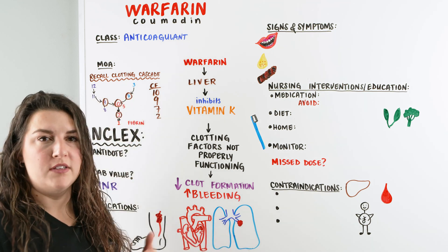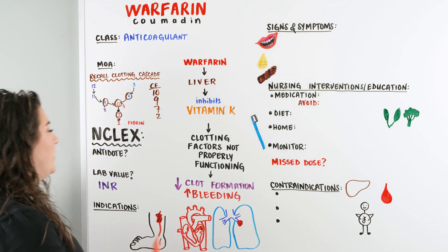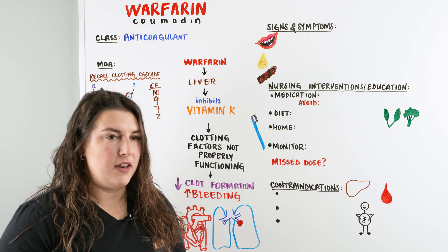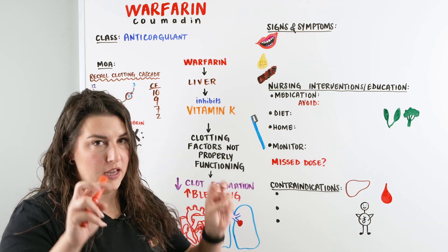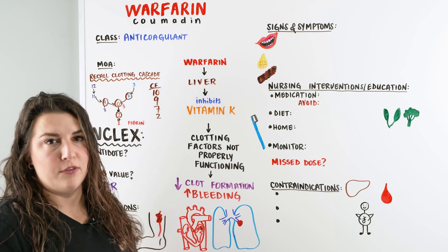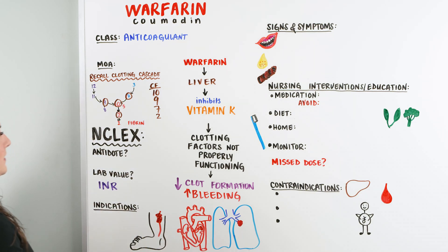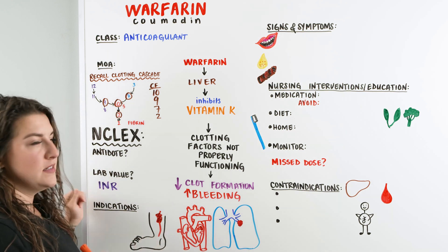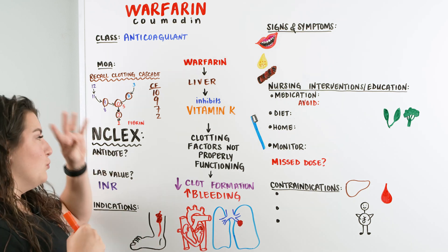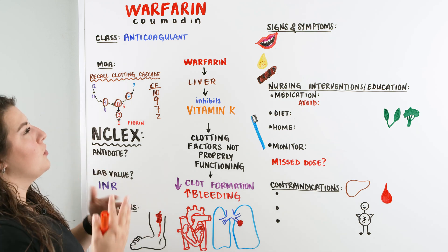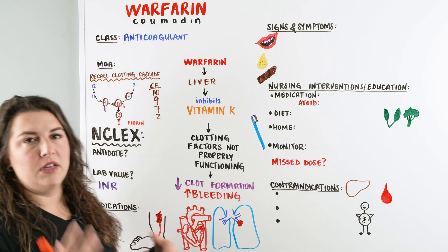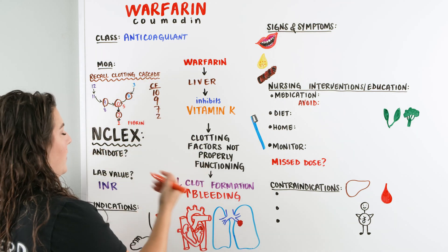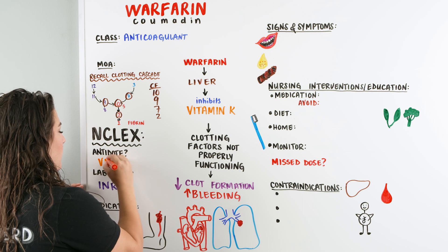Because if our patient has a problem with clotting and can bleed out, we need to think about how we keep our patients safe. On the NCLEX, the big things are how do we keep patients safe and how do we know their blood is thinning at the right pace. The first big thing for the NCLEX is the antidote — and the antidote for warfarin is vitamin K.